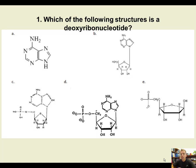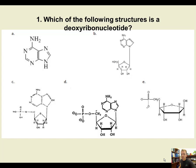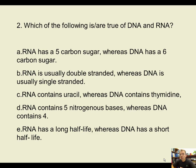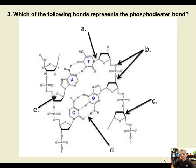Question one: which of the following structures is a deoxyribonucleotide? Feel free to pause the video if you want more time to look at it. Question two: which of the following is or are true of DNA and RNA? Question three: which of the following bonds represents the phosphodiester bond? And finally, question four: the inverse complement of the following DNA sequence would be what?